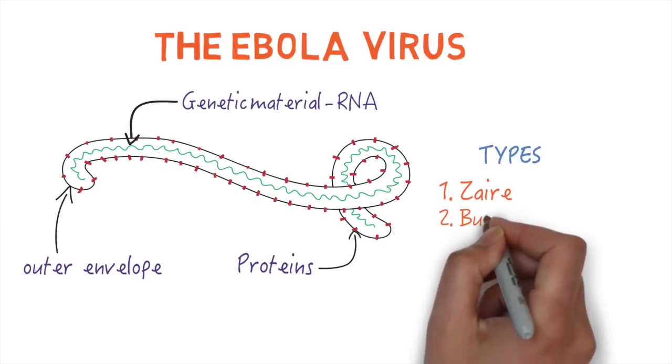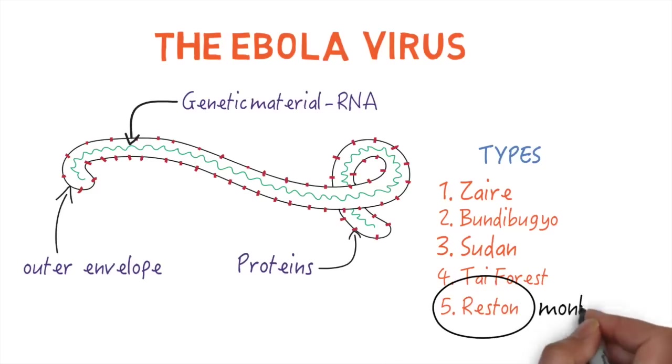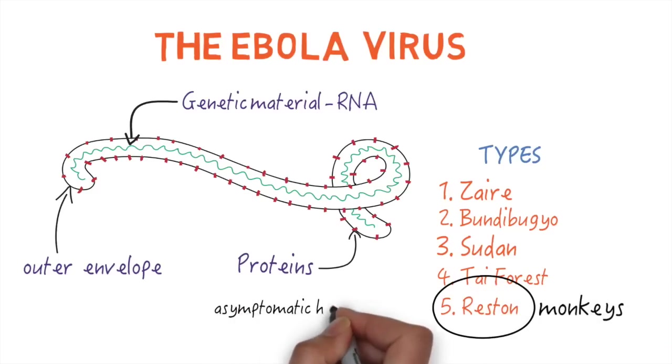There are five different kinds of this virus. Only four of them cause disease in humans. The other one affects monkeys, and although it can infect humans, it doesn't seem to cause disease.